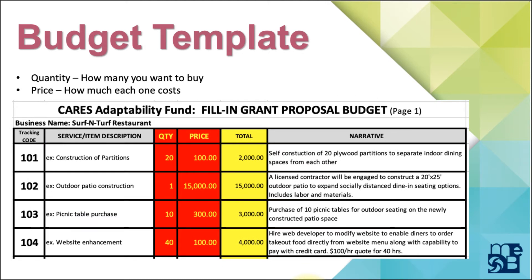The next columns are quantity and price. Next to 101, they're going to build 20 partitions that cost $100 a piece. Next to 102, they're going to build one deck for $15,000 — having a written estimate might strengthen the proposal. Next to 103, they're buying 10 picnic tables at $300 a piece. And lastly, they're paying a web developer $100 an hour for 40 hours to update their website. Again, having an estimate might be helpful.